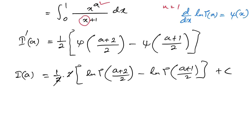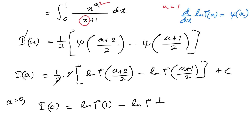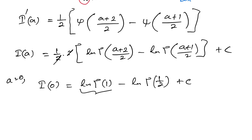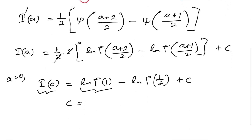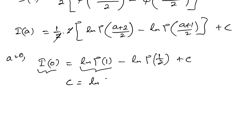The 2s cancel, so let's plug in a equals 0. We have I(0) equal to natural log of gamma(1) minus natural log of gamma(1/2) plus C. We know I(0) equals 0 and natural log of gamma(1) equals 0, so C equals natural log of gamma(1/2). Since gamma(1/2) equals the square root of pi, we have C equals natural log of square root of pi.